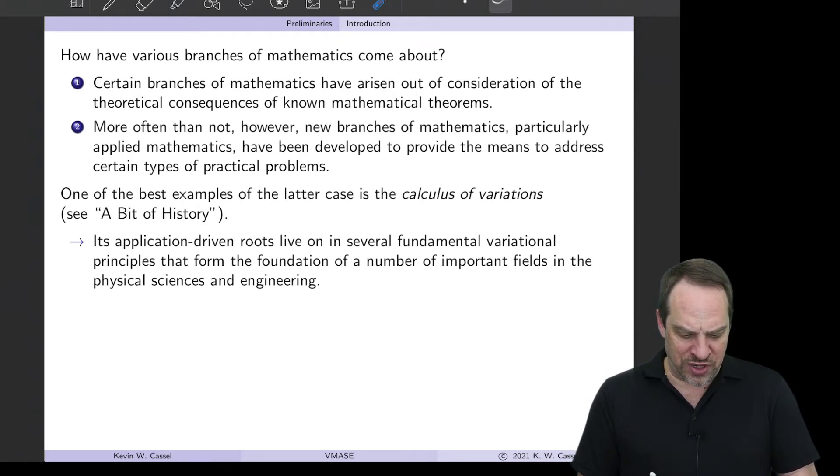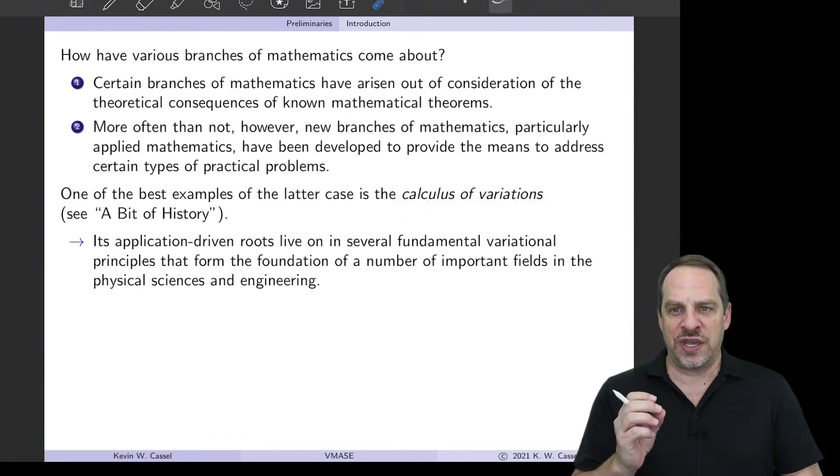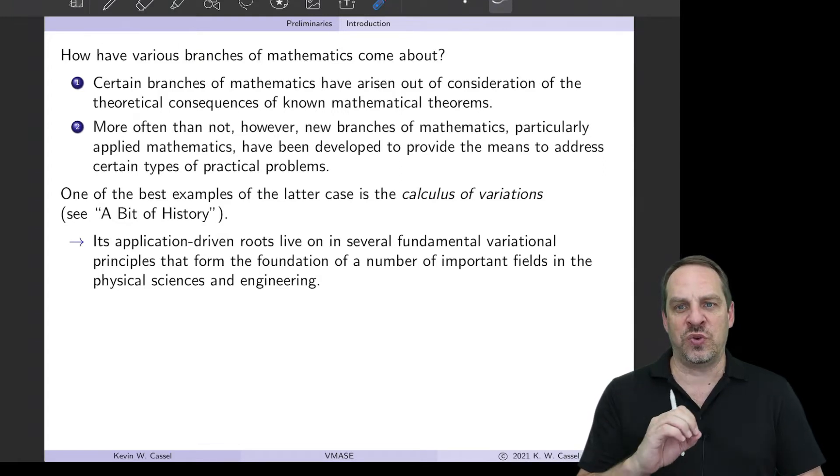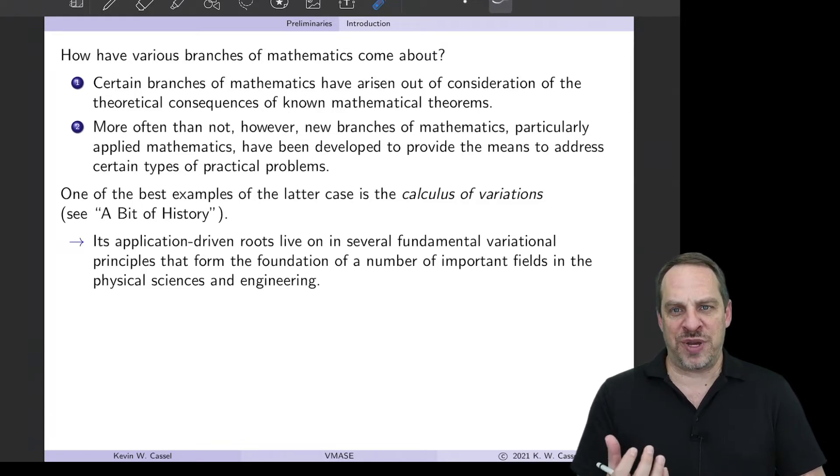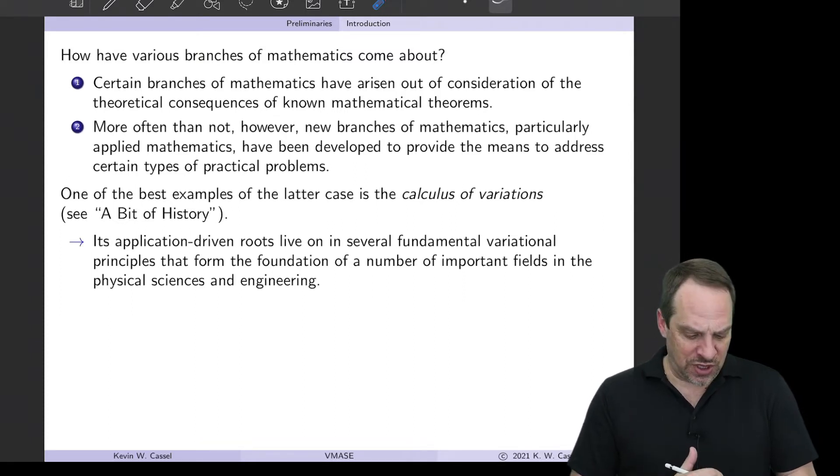There's probably no greater example of this than the calculus of variations. The origins of the calculus of variations were very much rooted in some historical figures whose names you've heard before, but who had some very specific problems they wanted to solve, but the tools in their mathematical toolbox at the time were not sufficient. And so they had to develop the new mathematics to solve those problems. This is described in the section of the book on a bit of history.